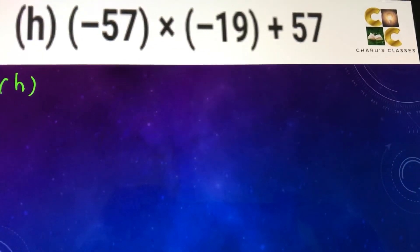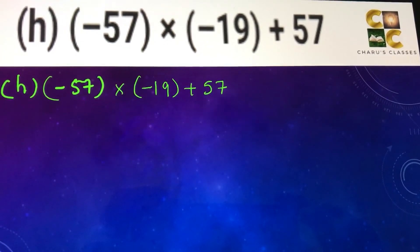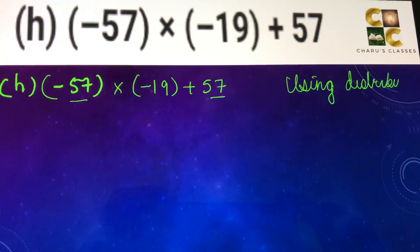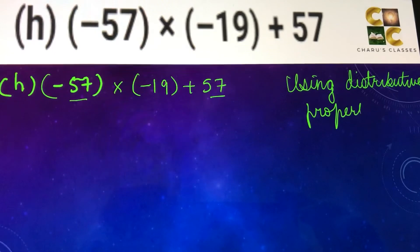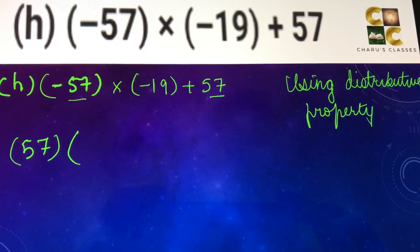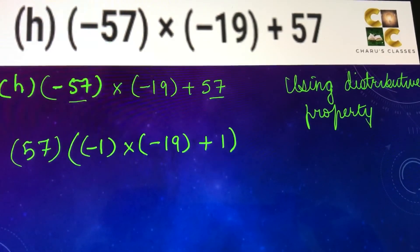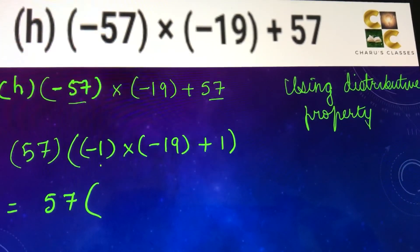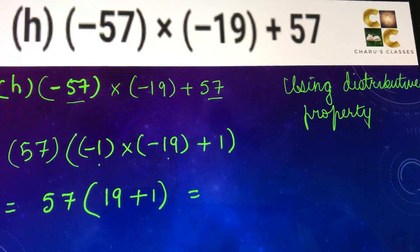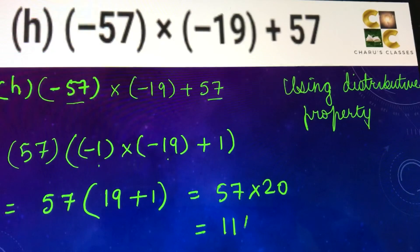Part h: minus 57 into minus 19 plus 57. Since 57 can be taken as common, we are using distributive property. Taking 57 as common — here it is minus 57, so minus 1 will be left. So this is 57 into minus 1 into minus 19 plus 1. Minus 1 into minus 19, two negative numbers in multiplication give positive, so 19 plus 1 is 20. So 57 into 20 gives the answer 1140.